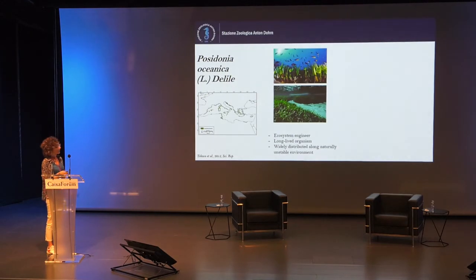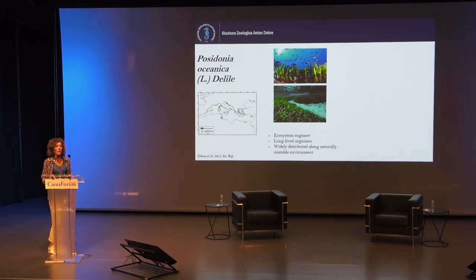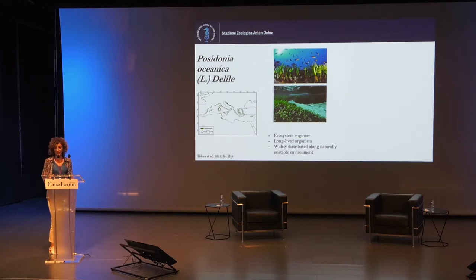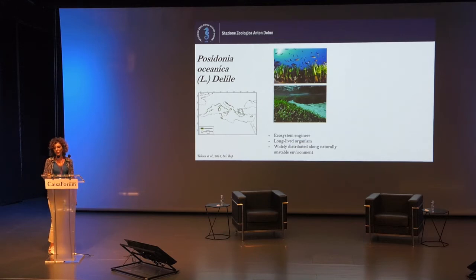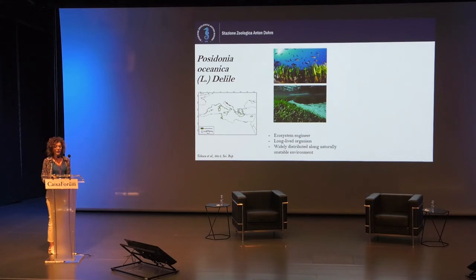Posidonia oceanica is a marine plant forming extensive underwater meadows. It plays important functional roles along the coast of the Mediterranean basin. It colonizes different environments with varying environmental conditions, and it is also one of the oldest organisms on Earth.